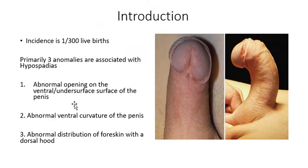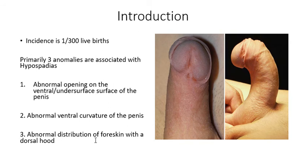The incidence of hypospadias is 1 in 300 live births. Primarily three anomalies are associated with hypospadias: abnormal opening on the ventral or undersurface of the penis, abnormal ventral curvature of the penis — bent ventrally like this — and abnormal distribution of foreskin with a dorsal hood, where the prepuce is deficient on the ventrum but present on the dorsum.